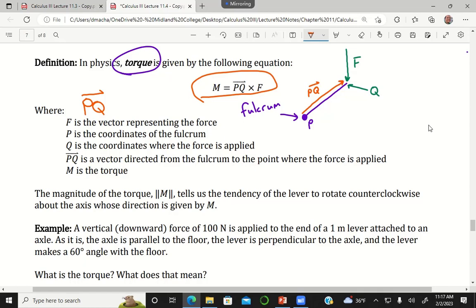I thought torque should be T instead of M, but I guess I just used what your book used. The way we interpret this is the magnitude of the torque tells us the tendency of the lever to rotate counterclockwise about the axis whose direction is given by M.